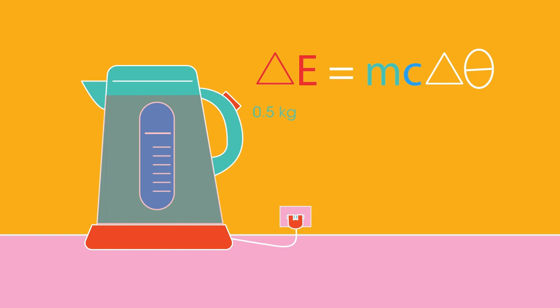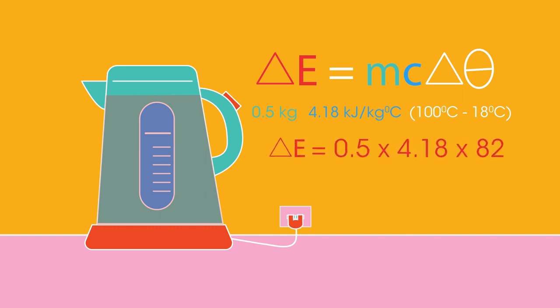If we take 0.5 kilograms of water, or half a litre, at 18 degrees Celsius and heat it to boiling at 100 degrees Celsius, then energy used equals 0.5 times 4.18 times 82, which equals 171.38 kilojoules.